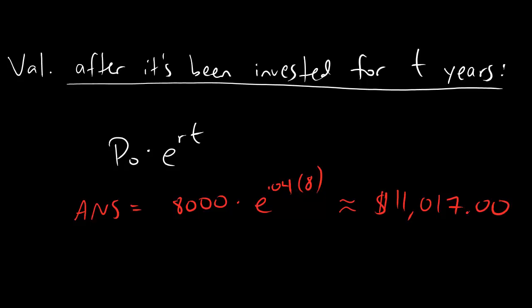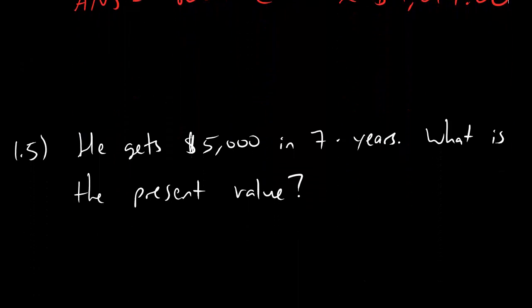That's pretty cool. That's all review — you're probably familiar with that. Just as another point of review, let's make sure we understand section 1.5, which says this: what if 7 years from now, someone hands Mr. Frenchy Poo $5,000? What is the present value? Remember, present value is just a fancy name for now — as in how much it's worth currently.